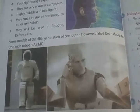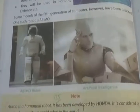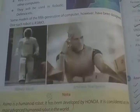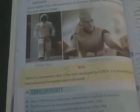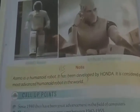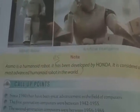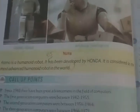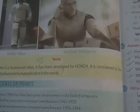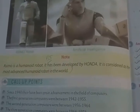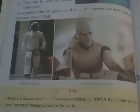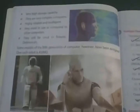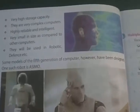A model of 5th generation computers is ASIMO, a robot that runs on artificial intelligence. It was made by Honda — a humanoid robot designed by Honda company and considered the most advanced humanoid robot to date. Class finished, chapter complete.